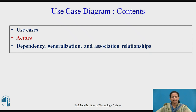A use case diagram is a diagram that shows a set of use cases and actors and their relationships. It is a special kind of diagram and shares the same common properties as all other diagrams — a name and graphical contents that are a projection into a model. What distinguishes a use case diagram from all other kinds of diagrams is its particular content. Use case diagrams commonly contain use cases, actors, dependency, generalization and association relationships.